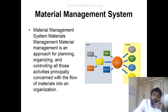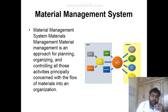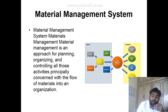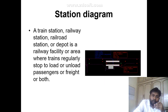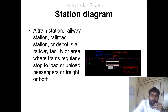Next is the material management system. The material management system is an approach for planning, organizing and controlling all activities principally concerned with the flow of material in an organization. Next is the station diagram. Train stations, railway stations, railroad stations and depots are railway facilities — areas where trains regularly stop to load or unload passengers or freight, or both.